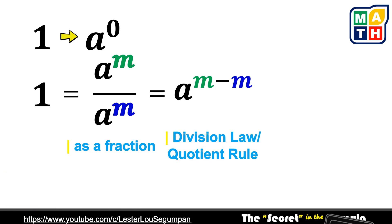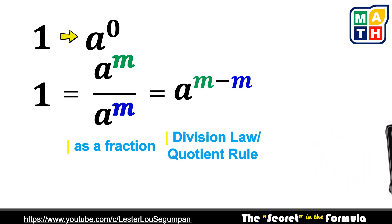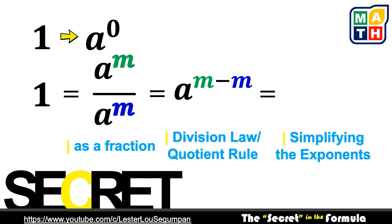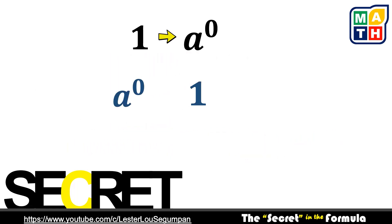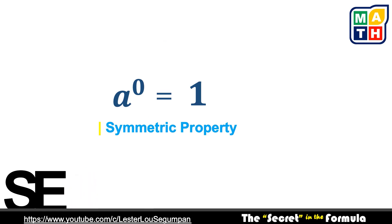Here comes the secret for this law or formula. Notice that when we have m minus m, we are subtracting the same numbers, so it will automatically result in a value of zero. Hence, our final expression is a to the power of zero. Looking at the endpoints of this process, we could show that we have reached our intended output. Interchanging both sides by the symmetric property and replacing the arrow with equality, this shows that any expression raised to the power of zero will be equal to one.